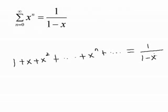Here is an example. Suppose we have the sum from n equals 0 to infinity of x to the n. We can write that as 1 over 1 minus x, simply because we're using the geometric series formula. Of course we do have to require that the absolute value of x be less than 1, in the same way that we have that requirement for the geometric series theorem. So we can actually write 1 over 1 minus x as an infinite polynomial — a power series — by simply using the geometric series formula.